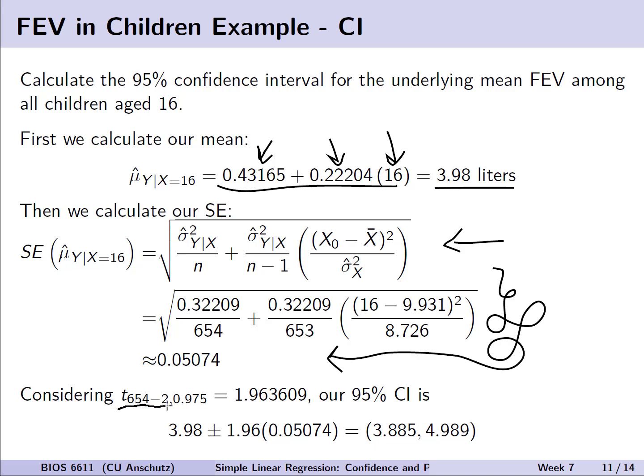With this information then, if we calculate what our critical statistic is at 654 minus 2 or 652 degrees of freedom, we see that with this large sample size we basically have a value of 1.96 that we often use if we're assuming normality with the standard normal distribution. We can then calculate the 95% confidence interval by using the equation previously, and we see that the 95% confidence interval for the underlying mean FEV is going to be 3.885 to 4.989. Or in other words, to put in the strict interpretation of a confidence interval, we are 95% confident that the true population mean for FEV among all children age 16 falls between 3.885 and 4.989 liters. Now of course this is looking at the mean FEV in a population, not the potential FEV for one individual.